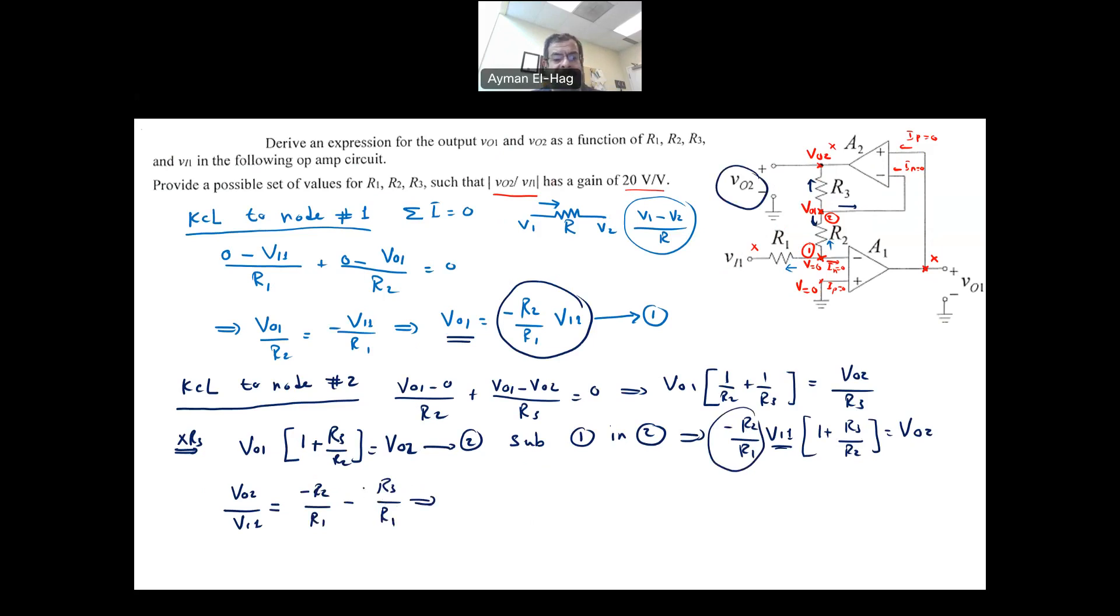Now, we want to find or provide a possible set of values of R1, R2, and R3 so that the absolute value of the gain equal to 20. So the absolute value of the gain would equal to R2 plus R3 over R1. Now this is an open question. So if I select R2 equal to R3, each one is equal to 10 kilo ohm, and you select R1 equal to 1 kilo ohm, then you will satisfy that condition. So that is one possible set of resistors that will give you an absolute value of the gain. And that is the solution of this question.